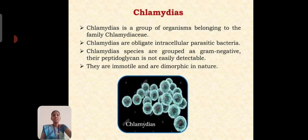First, we will see about Chlamydiae. Chlamydiae is a group of organisms belonging to the family Chlamydiaceae. Chlamydiae are obligate intracellular parasitic bacteria. Chlamydiae species are grouped as Gram-negative. Their peptidoglycan is not easily detectable. They are immobile and dimorphic in nature.